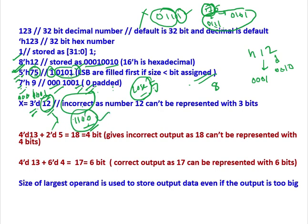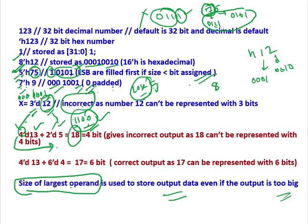If we write 4'd13 plus 2'd5, then 13 plus 5 decimal is 18. But we have maximum 4 bits at our output. Size of the largest operand is used to store the output data, even if the output is too big. So here Verilog will accept only 4 bit data. And we cannot represent 13 plus 5 equal to 18 with 4 bit data. So it will give incorrect result.